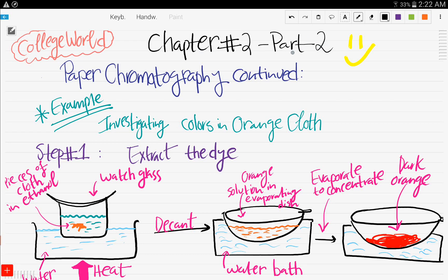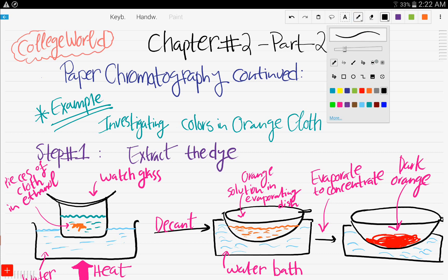Part 2 of chapter number 2. In this chapter, we will be continuing with paper chromatography that we have started in the previous video. In the previous video, we gave the example of investigating solutes in black ink, and also we said that one of the other uses of chromatography is to investigate colors in a colored cloth. And so we'll start off this video by investigating colors in an orange cloth.